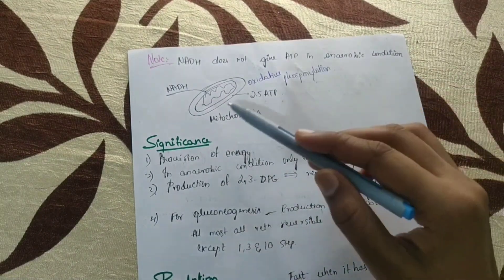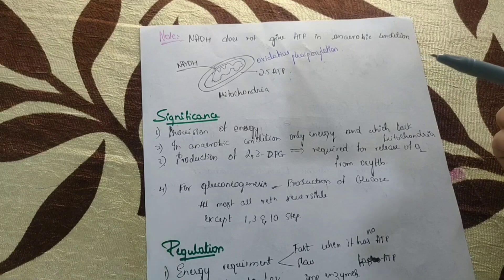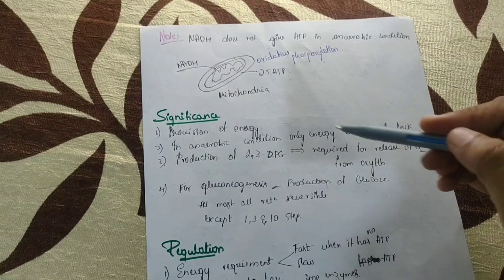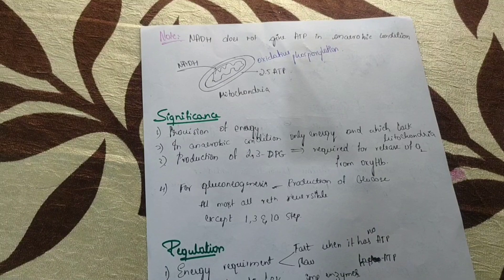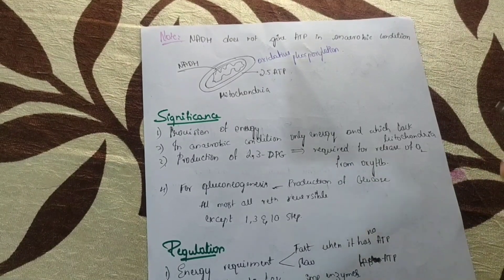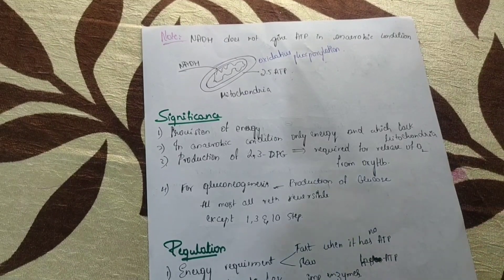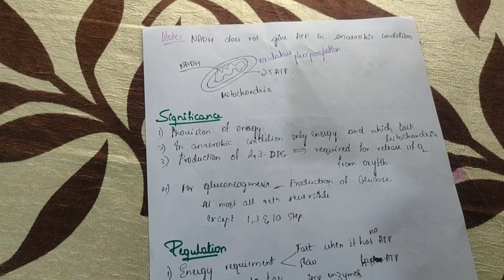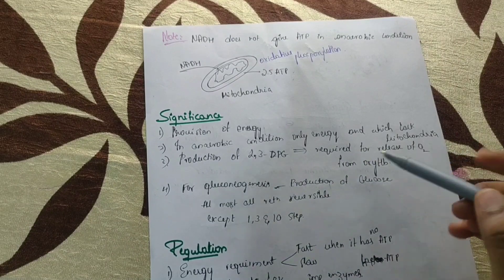The significance of glycolysis is to provide energy for the metabolic reactions taking place in the cell. In anaerobic conditions — like in skeletal muscles during severe exercise — all the inhaled oxygen gets consumed, creating anaerobic conditions. Glycolysis becomes the only energy-providing process because the skeletal muscles lack oxygen and the ETC cannot take place, so only glycolysis provides energy in such cases.